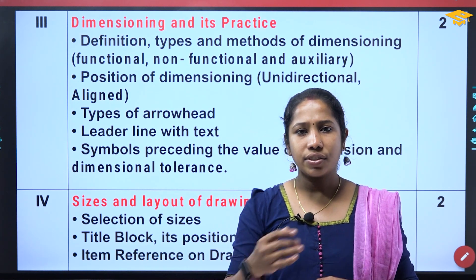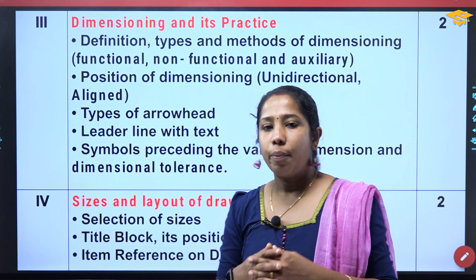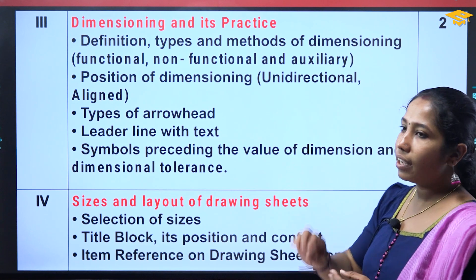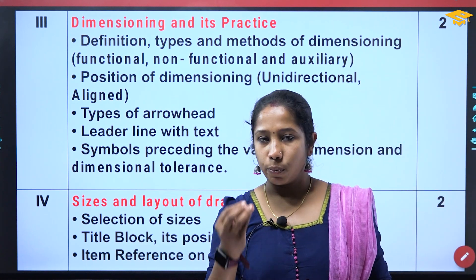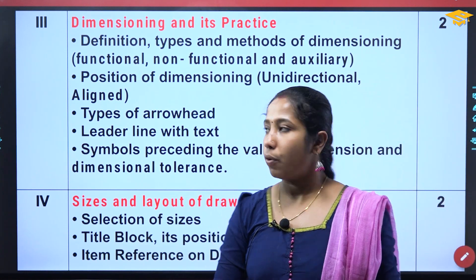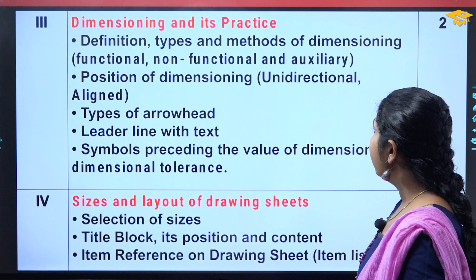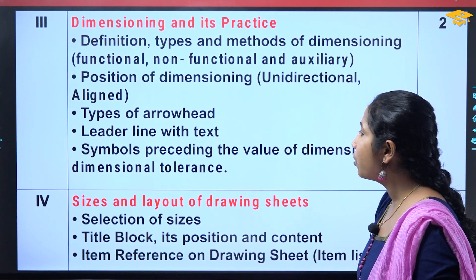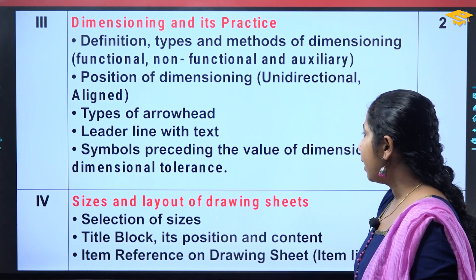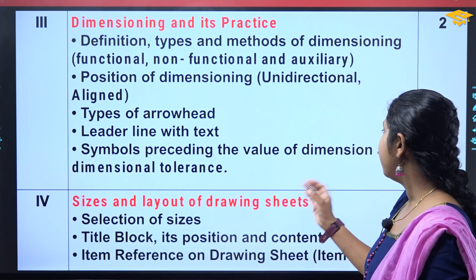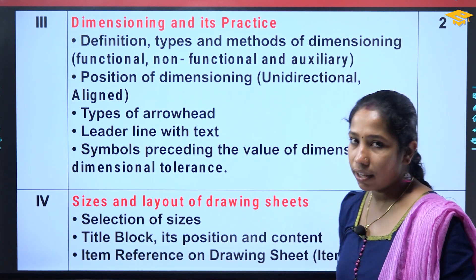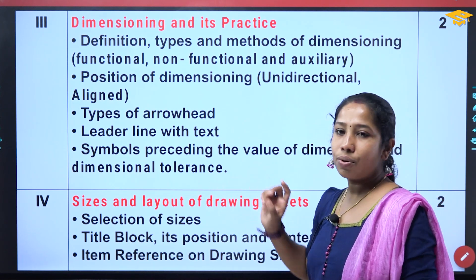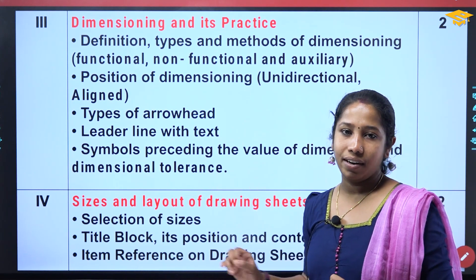Aligned and unidirectional dimensioning. Functional, non-functional, and auxiliary. We will learn everything about dimensioning and objectives. Then position of dimensioning — unidirectional and aligned. Types of arrowhead. The leader line with text. Symbols preceding the value of dimension and dimensional tolerance. Dimensional tolerance is a question in the previous paper.